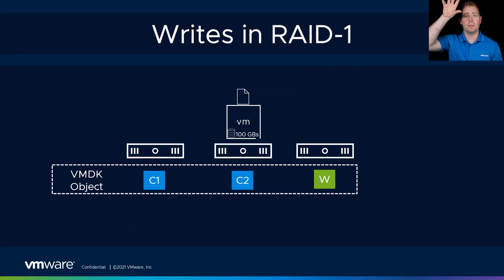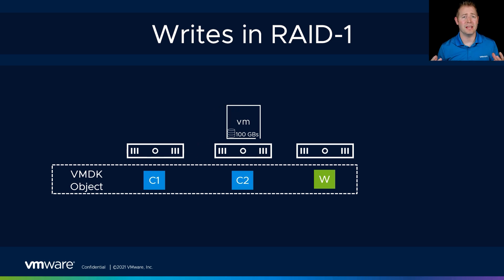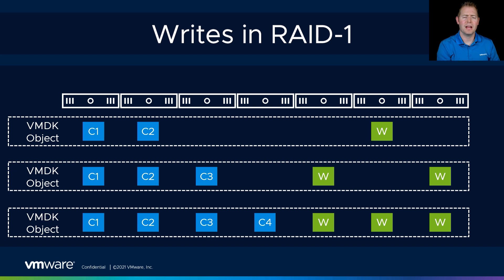Our RAID 1 policy mirrors data in the environment. I want to talk about it from a write perspective. Every time our VM wants to write a piece of data, it has to write to both components simultaneously. If we're having an issue with one component, however long it takes for that component to acknowledge the write determines the total write latency. If one component takes 5 ms and another takes 1 ms, that write still took 5 ms overall. So as we increase our failures to tolerate, we're adding additional storage requirements, host requirements, and write requirements — because we're writing that data in multiple locations.